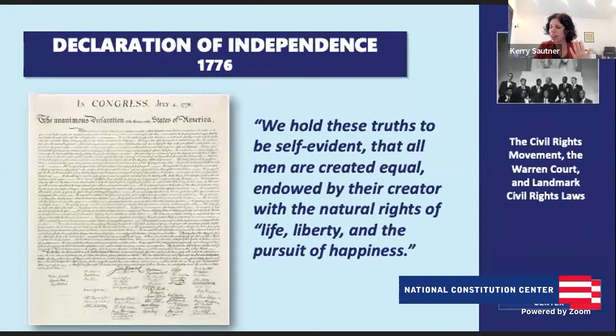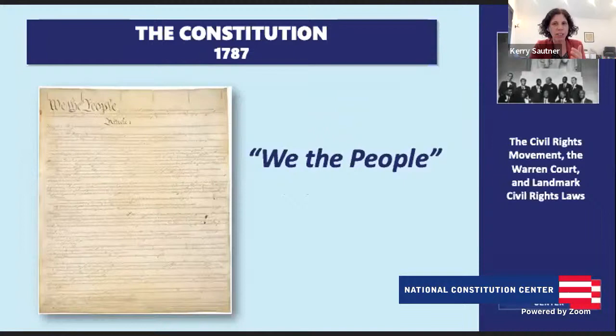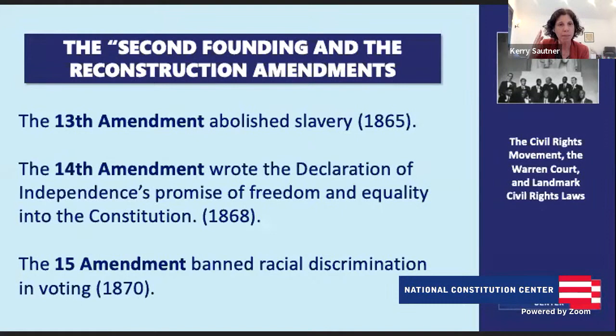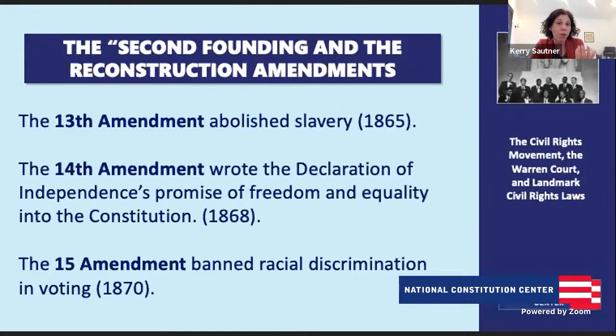That's unbelievably huge and powerful — equality is written into our DNA as a country. We look at the Constitution that begins with 'we the people' and how that is fulfilled, but it really empowers us with the Reconstruction era when three big amendments are written into the Constitution. After the Civil War, we tried to write new constitutional baselines — the 13th Amendment ratified in 1865 abolishes slavery; the 14th Amendment ratified in 1868 wrote the Declaration's promise of freedom and equality into the Constitution; and the 15th Amendment ratified in 1870 banned racial discrimination in voting.